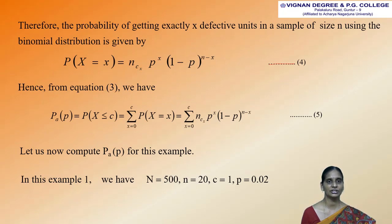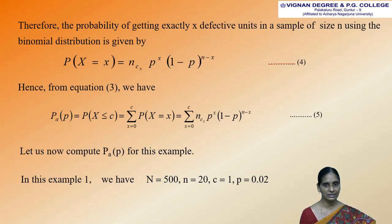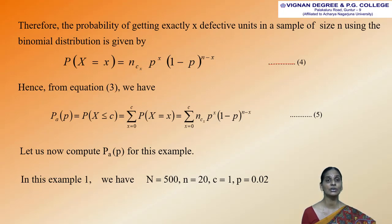Substituting equation 4 into equation 3, we get Pa(p) = P(X ≤ c) = summation from X equals 0 to c of nCx · p^x · (1−p)^(n−x). Now we compute Pa(p) using example 1, where capital N equals 500, small n equals 20, acceptance number c equals 1, and lot quality p equals 0.02.